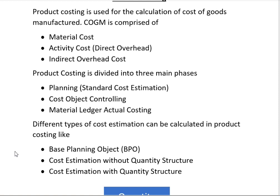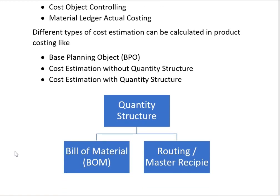The second type is cost estimation without quantity structure, where we have not yet defined the quantity structure of the material. The third type is cost estimation with quantity structure. The quantity structure is divided into two components: one is the BOM (Bill of Materials), where we specify the materials that will be used for the production of the finished good or semi-finished good; and the second is Routing or Master Recipe, where we allocate the activity types for production.